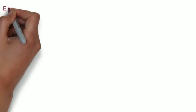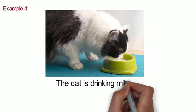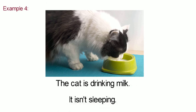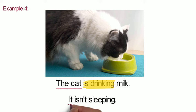Let's try one more. The cat is drinking milk. It isn't sleeping. Now underline the subjects and highlight the verbs. In the first sentence, the cat is the subject and the verb is is drinking. In the next sentence, it is the subject and isn't sleeping is the verb.